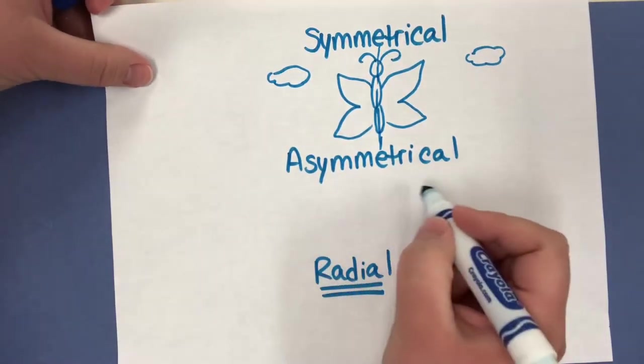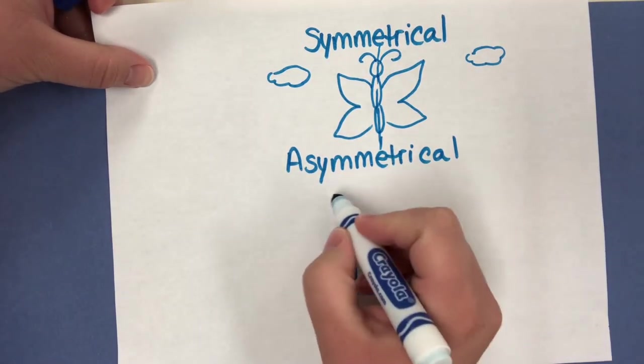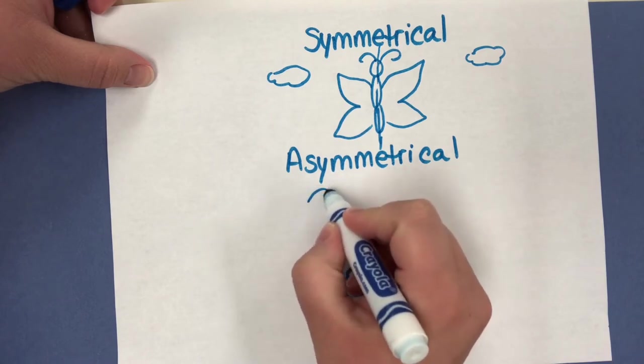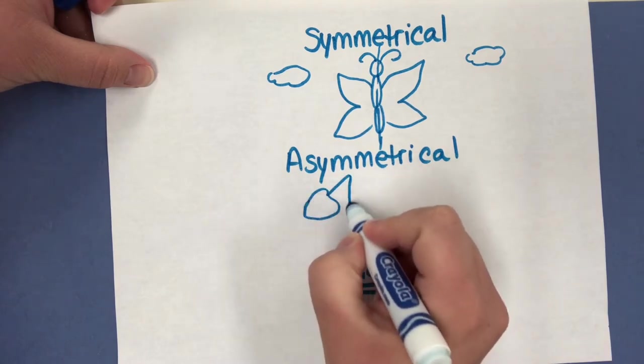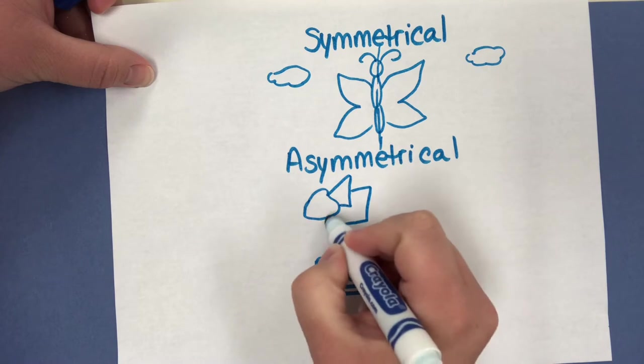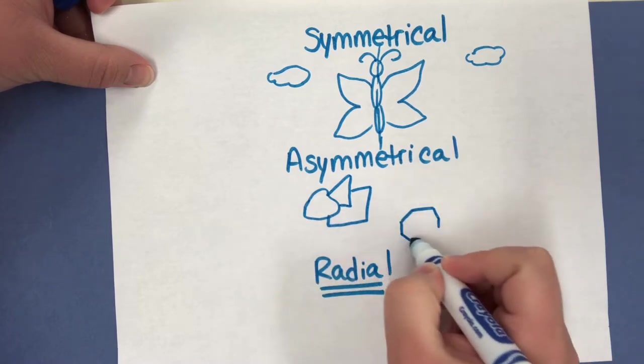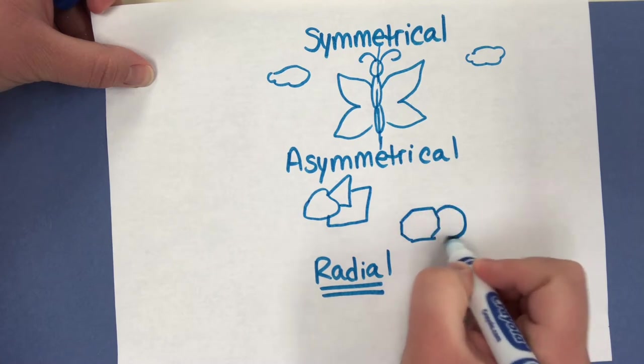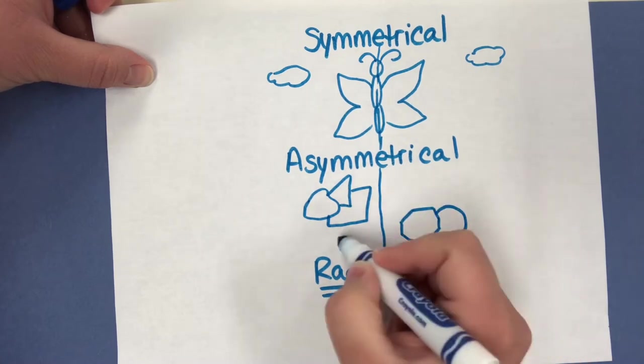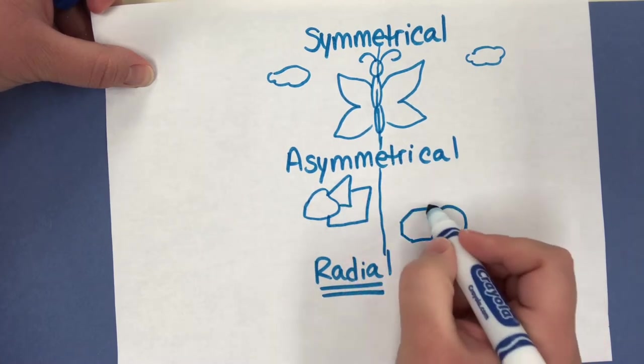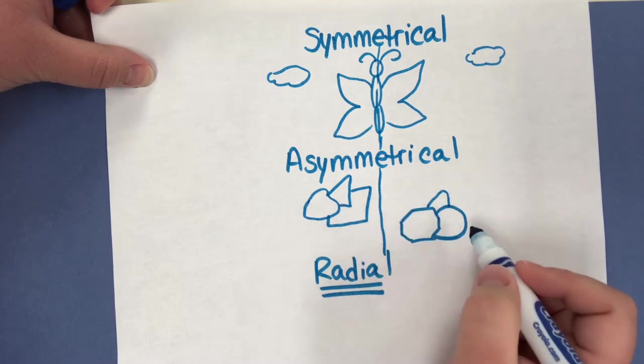Asymmetrical balance. There is balance in the artwork. So there might be objects or shapes on this side of the artwork and objects and shapes on this side of the artwork. But if I divide it in half, it's not the same. But there is about an equal amount on both sides. So it's balanced out.